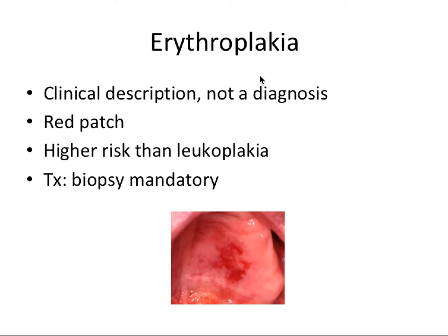Next, we have erythroplakia, which is a red patch — erythro meaning red, leuko meaning white. Again, it's a clinical description, not a diagnosis. Erythroplakia has a higher risk of malignant transformation than leukoplakia. An even higher risk is seen with erythroleukoplakia, which is a mixed white and red lesion. Because we don't know what's causing it, treatment requires a biopsy — it may be benign, or there may be something else going on.